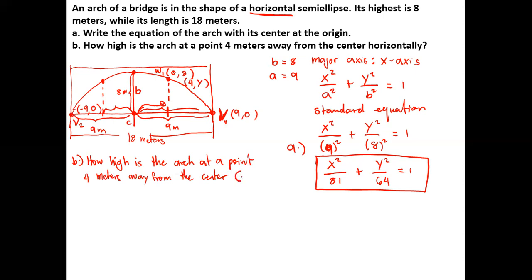The coordinate for that point is (4, y). We will use the standard equation to find the value of y, which is the height. Substituting into x²/81 + y²/64 = 1, we get 4²/81 + y²/64 = 1, which gives us 16/81 + y²/64 = 1.